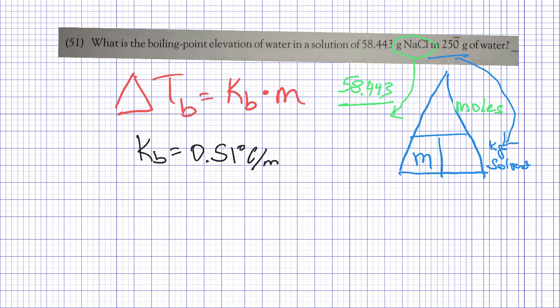Anyways, that's just a little side note. Here we go. Problem 51 says: what is the boiling point elevation of water in a solution of salt? They tell us how many grams of salt we have and 250 kilograms of water.